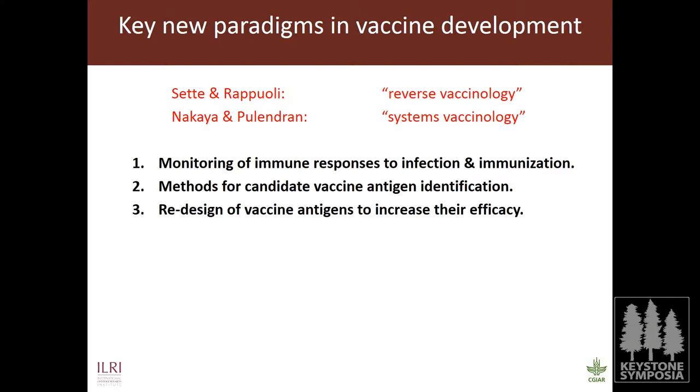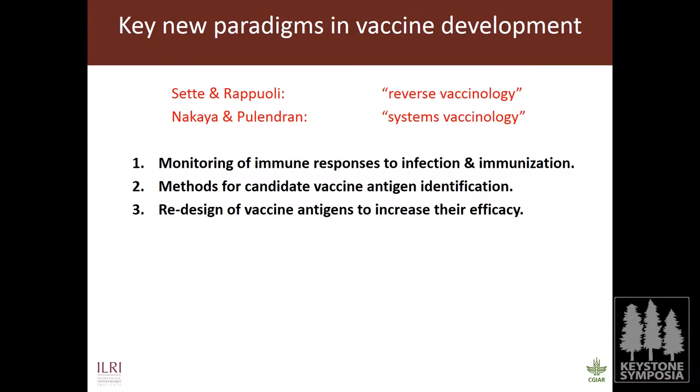I think this is a really exciting time in vaccine development for three key reasons. First, these tools allow us to monitor immune responses to both infection and immunization. Second, we have an incredible array of methods for identifying candidate vaccine antigens. Third, there's an increasing understanding of how to improve vaccine efficacy — by redesigning antigens, using different antigen delivery systems like viral vectors or live attenuated bacteria, and using adjuvants.